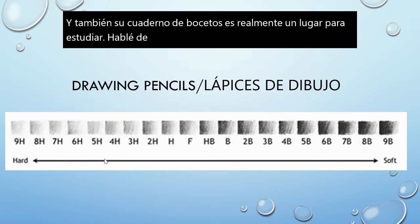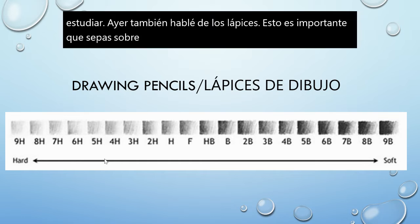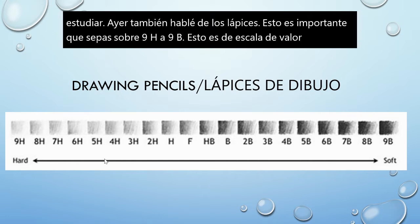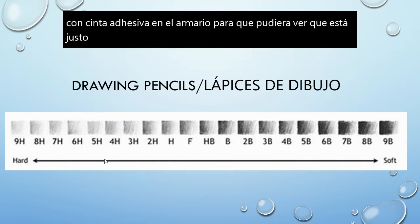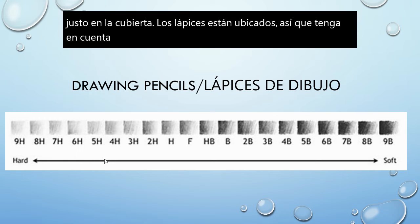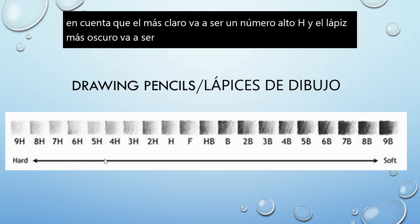I talked about the pencils yesterday too. This is important for you to know about 9H to 9B. This is a value scale, and I taped it to the cupboard so you could see it right where the pencils are located. Please keep in mind that the lightest is going to be a high number H, and the darkest pencil is going to be a high number B.